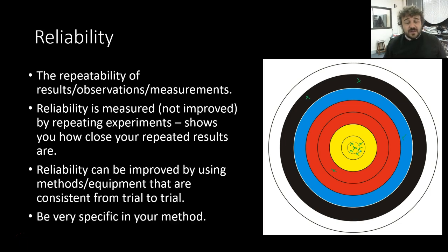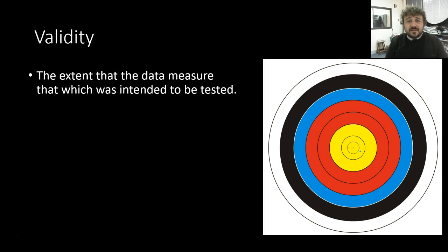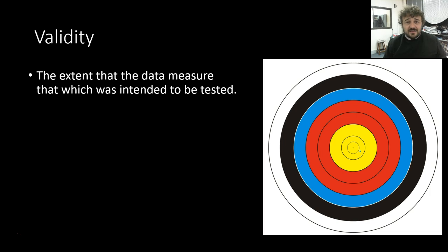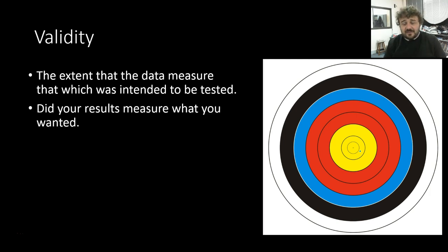This is why we need to be very, very specific in our method. Now, validity. Validity is essentially the extent that — basically, are you testing what you intended to test? The results and data you collect — are those data showing what you intended to? Did your results measure what you wanted to? Have you controlled your experiments?